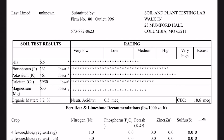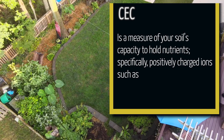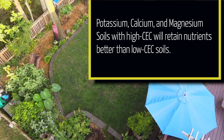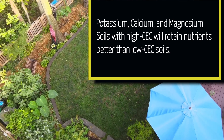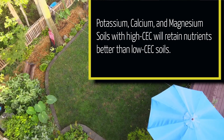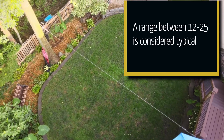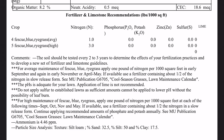Now we get a little more technical, and a good reason to have a lab do a soil analysis: cation exchange capacity, or CEC. CEC is a measure of your soil's capacity to hold nutrients, specifically positively charged ions such as potassium, calcium, and magnesium. Soils with high CEC will retain nutrients better than low CEC soils. A range between 12 to 25 is considered typical. Here again, the lawn is within parameters.